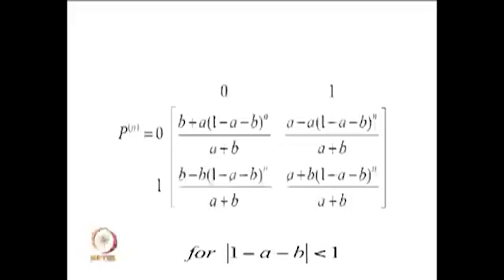This is the state transition diagram and the one step transition probability for a time-homogeneous discrete time Markov chain. Our interest is to find the distribution of xn for general n, for which we need the n-step transition probability matrix. Since the one step transition probability matrix is given, we can find p squared, p cubed, and so on.